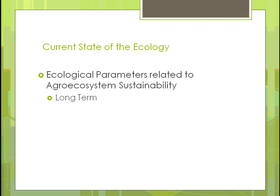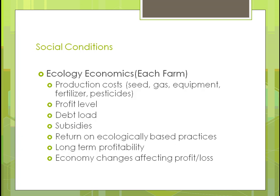To assess the current state of the ecology, you need to look at multiple parameters related to the agroecosystem for sustainability. An ecologist would be a good person to assess the current state, but you've got to look at it over the long term — sustainability is supposed to last over the long term, not just the short term. You also need to look at the economics: production costs including seed, equipment, fertilizer, and pesticides, as well as profit levels and debt load.